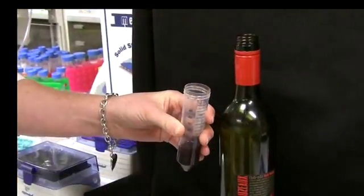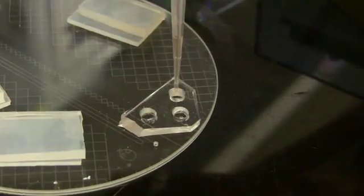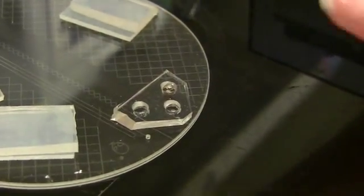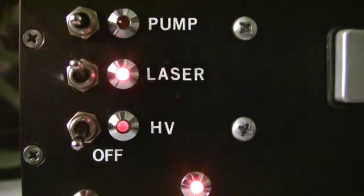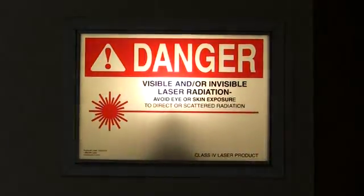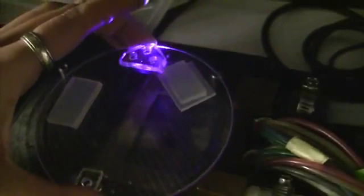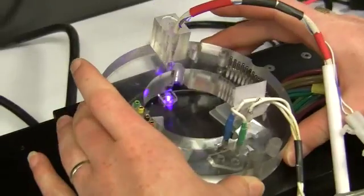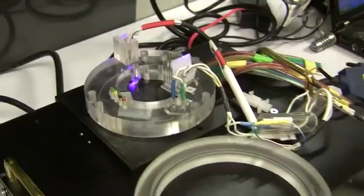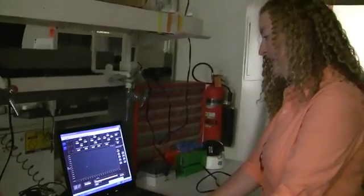To perform a test, scientists first put a few drops of the wine sample into the microchannel. The microchip is then put on the laser detection system to start the analysis. The operation is controlled and monitored by a computer. The result comes out in as quickly as five minutes.